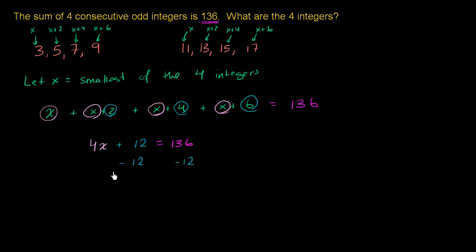Subtracting 12 from both sides gives us, on the left-hand side we're just left with 4x. And on the right-hand side we are left with 136 minus 12 is 124.